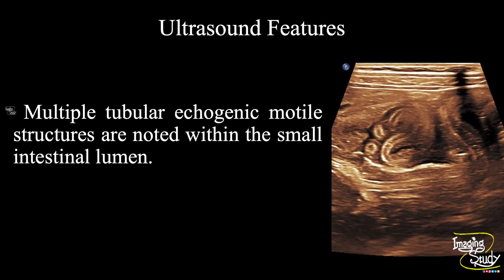So in summary, multiple tubular echogenic motile structures are noted within the small intestinal lumen, suggesting this as a case of intestinal ascariasis.